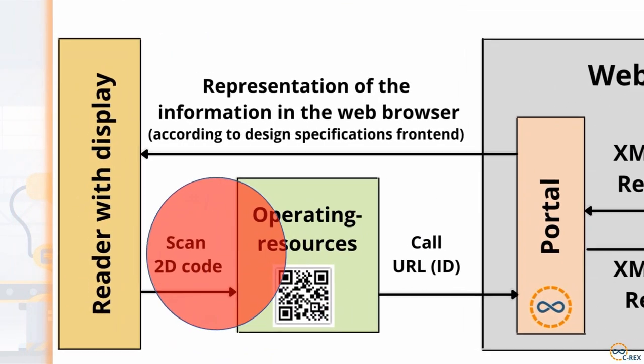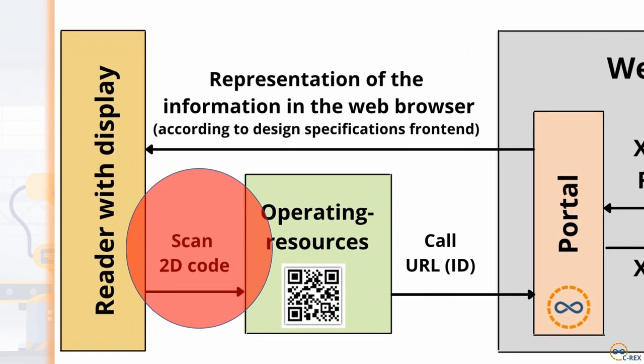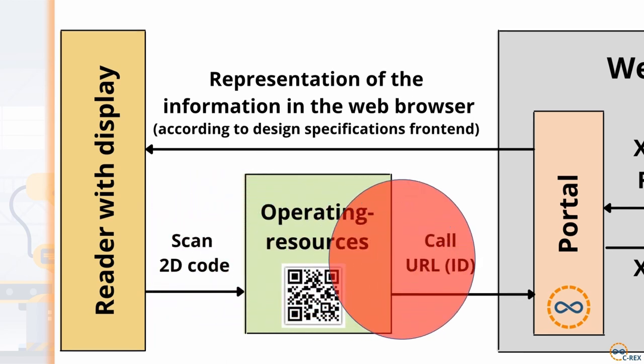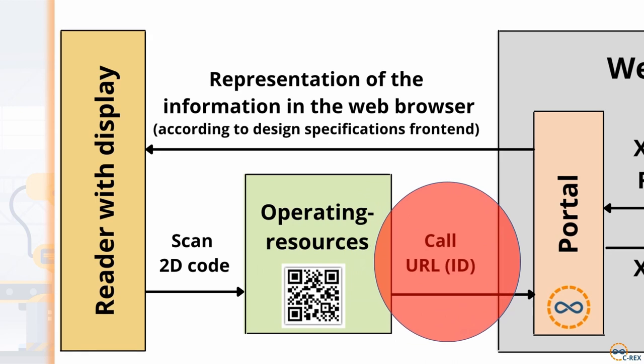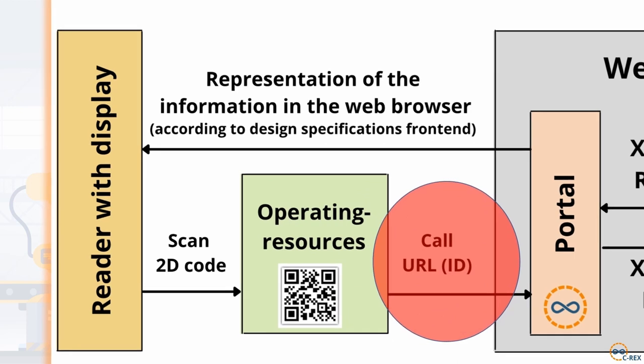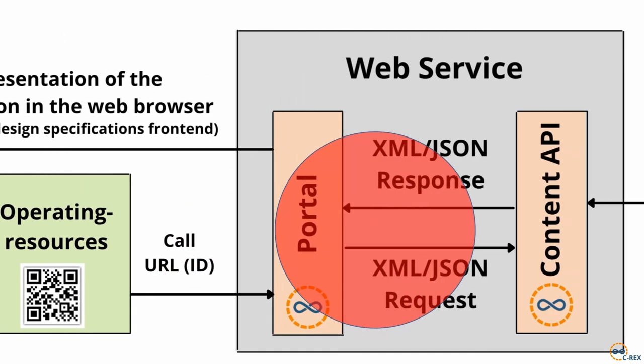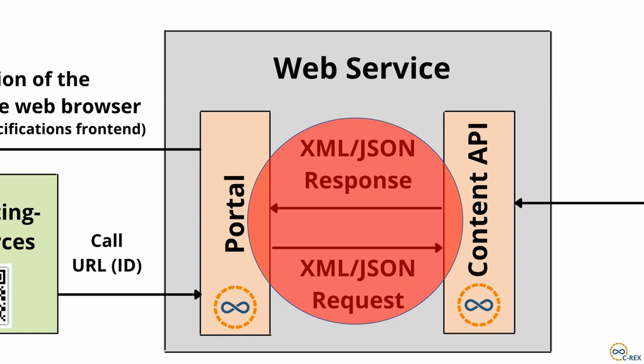Scanning the QR code on the nameplate triggers a request to the serex.net IDS content API. The product information marked by a unique identifier is displayed. At the same time, further queries run to find and display the related information units, such as circuit diagrams, documentation, certificates, and so on.